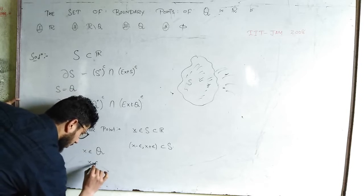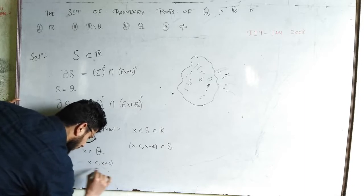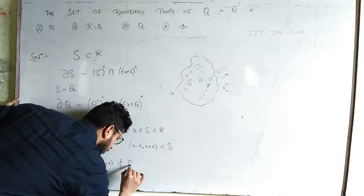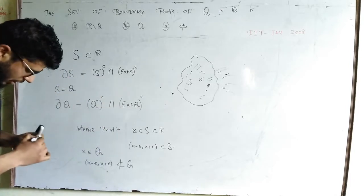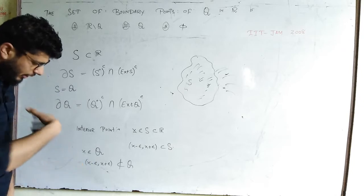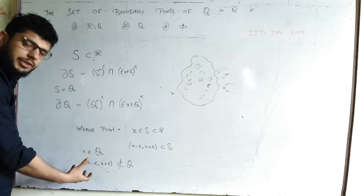Now if you look at Q, try to take an element from Q and you will try to take an interval. You can see this is not contained in Q. The reason is that in this interval there will be rationals as well as irrationals. The moment the irrationals come, it will not be the subset of this.